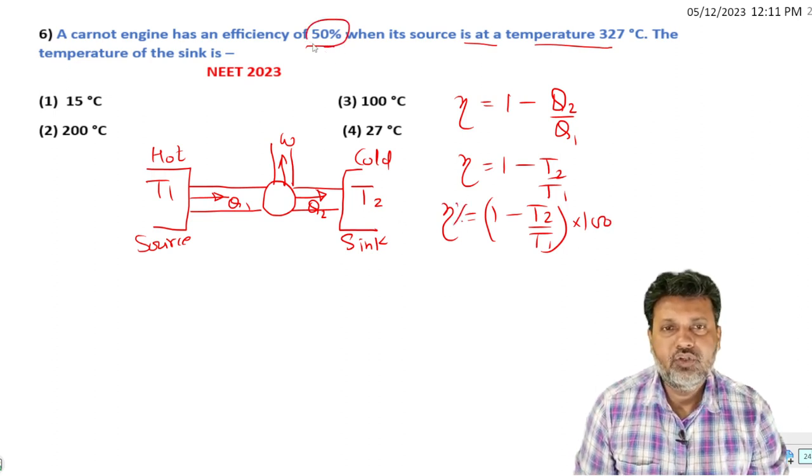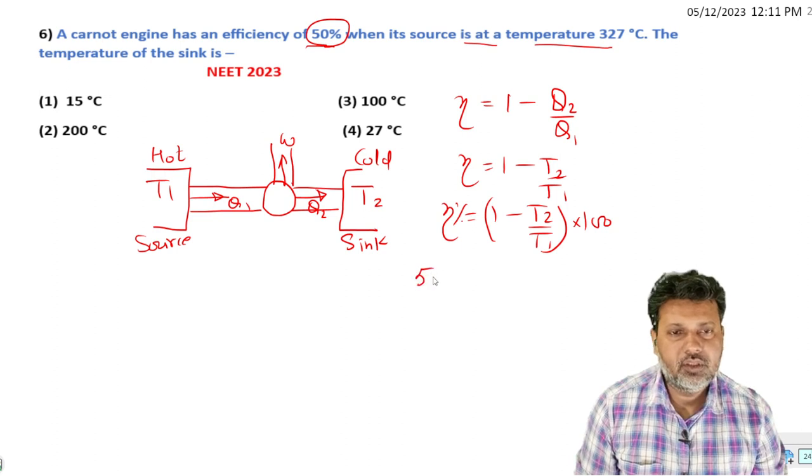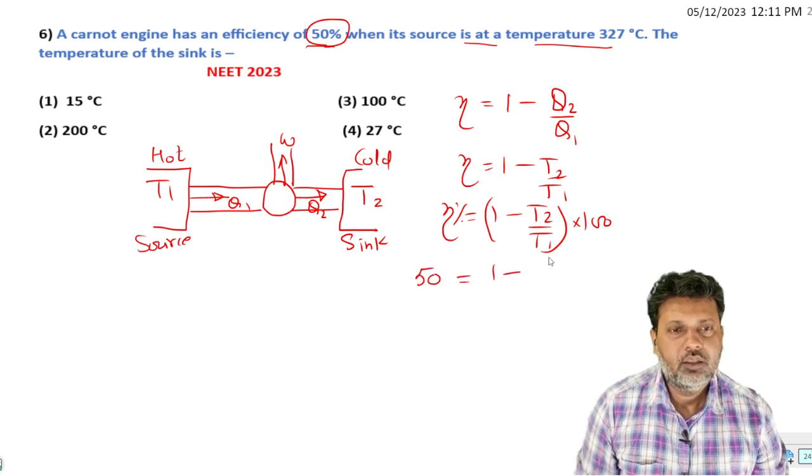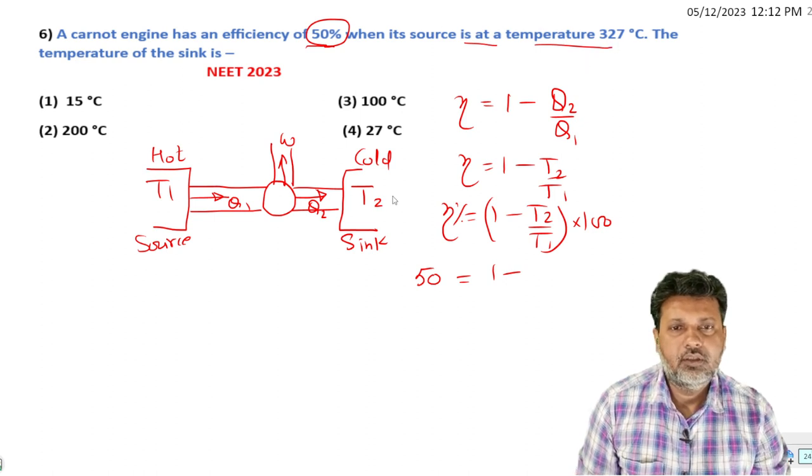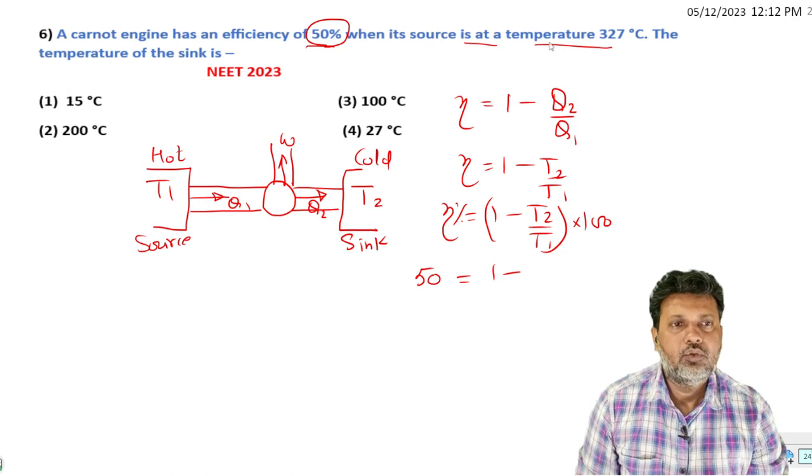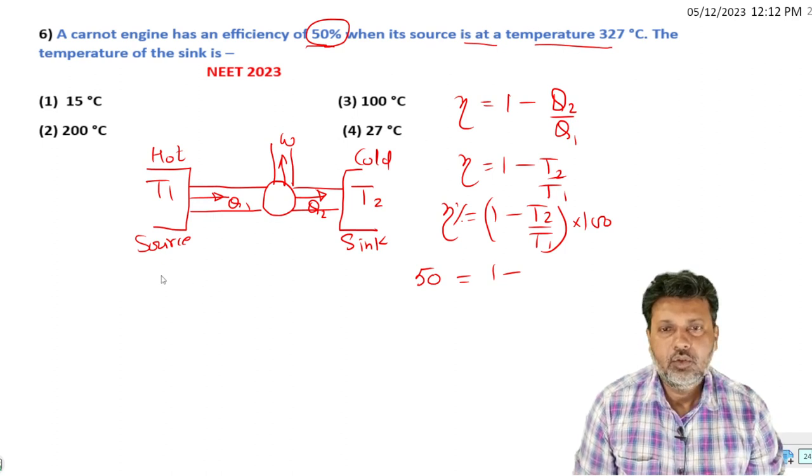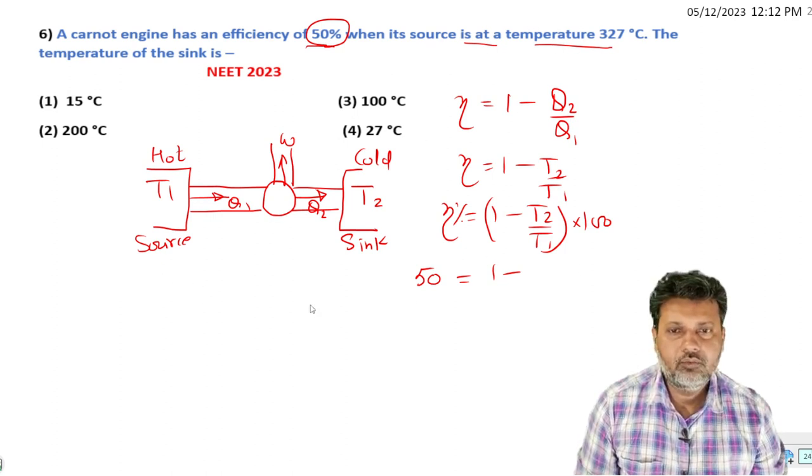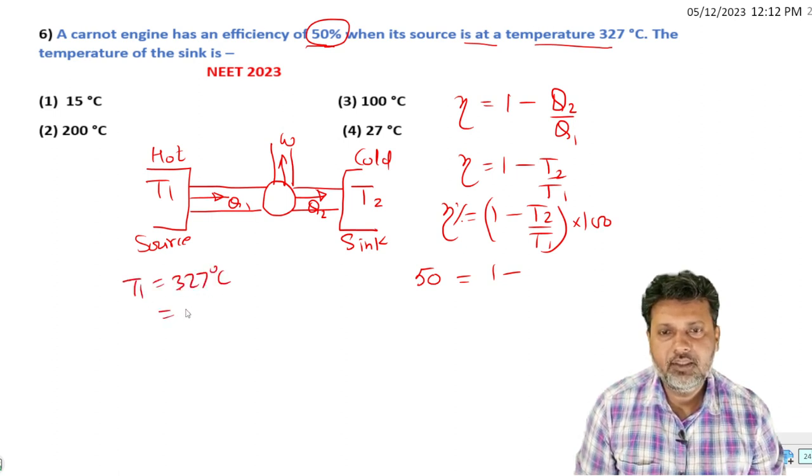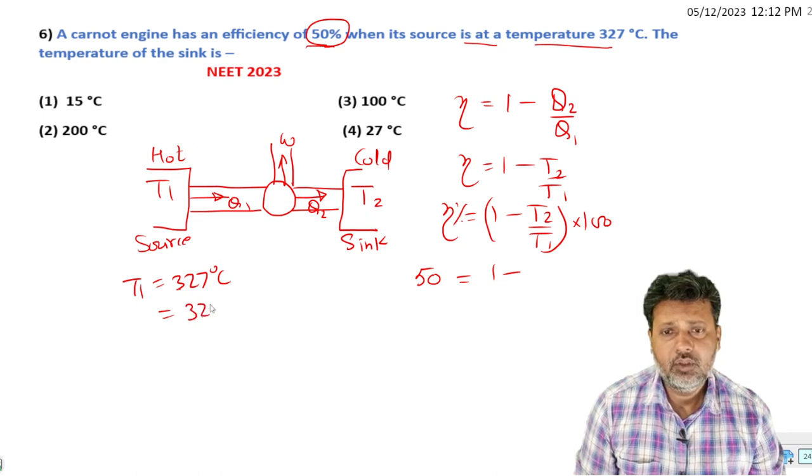The efficiency is 50%, so 50% is equal to one minus T2 over T1 into 100. The source temperature T1 is 327 degrees Celsius. Converting to Kelvin: 327 plus 273.